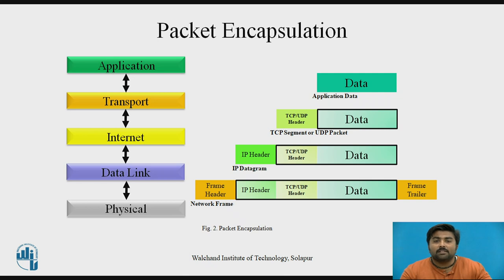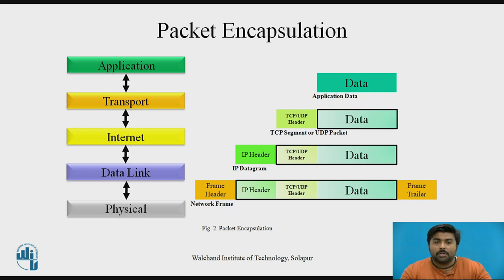The TCP segment header contains sender and receiver ports, segment ordering information, and a data field known as checksum. Each UDP header contains the sending and receiving host ports, a field with the length of the packet, and a checksum. Both TCP and UDP pass their segments and packets down to the Internet layer, where they are handled by the IP protocol. IP prepares them for delivery by formatting them into units called IP datagrams. IP attaches an IP header to the segment or packet's header, in addition to the information added by TCP or UDP.